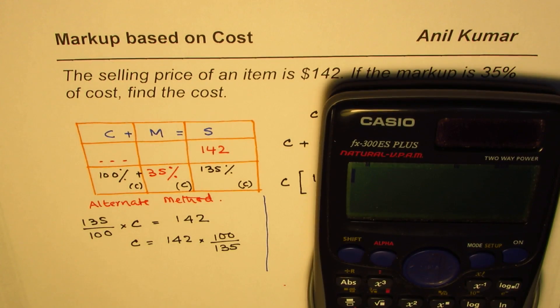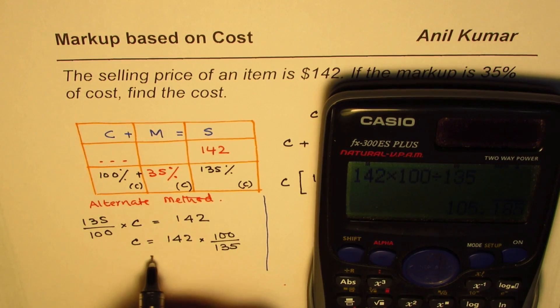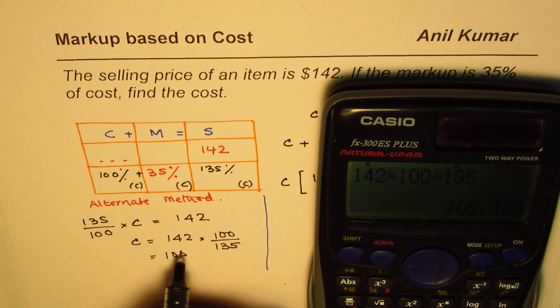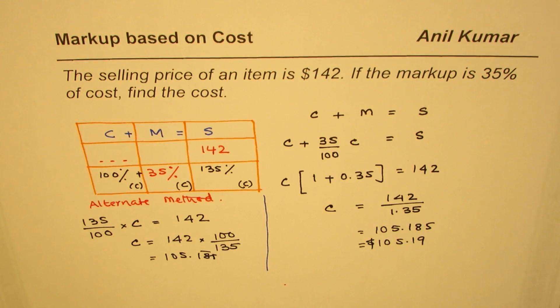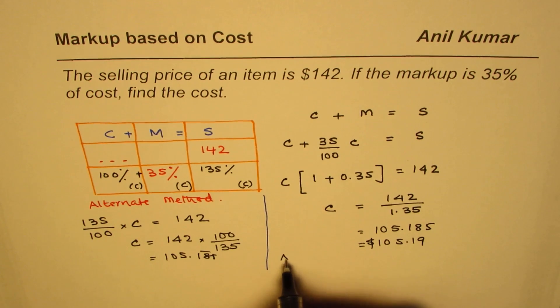This is a very useful method, especially for multiple choice questions. It takes less time. We'll use calculator to calculate: 142 times 100 divided by 135 equals in decimals our answer which is 105.185, approximately the same value. So that is how you can solve such questions.